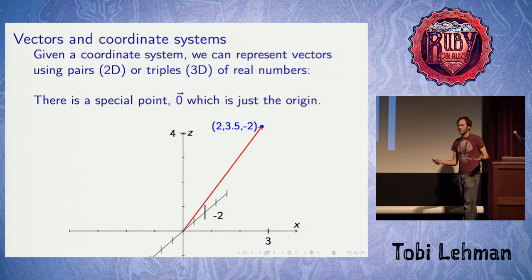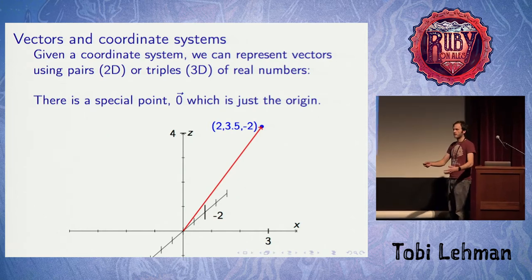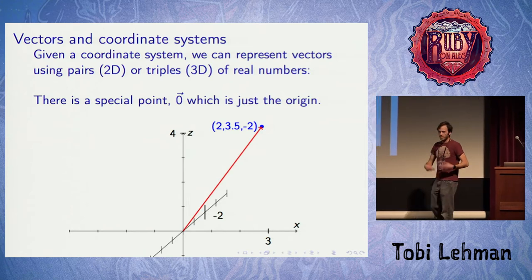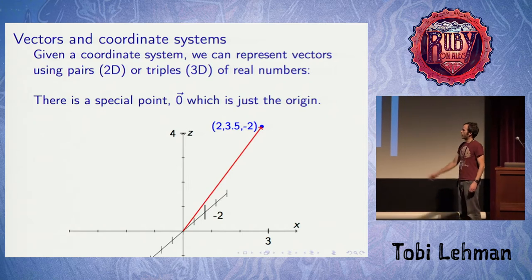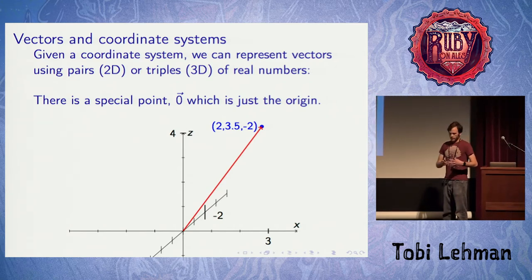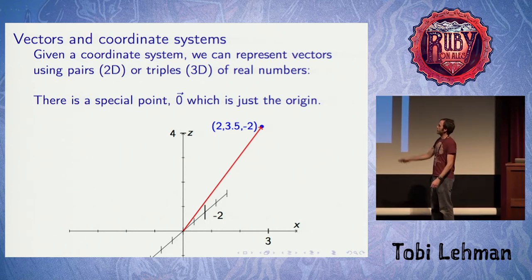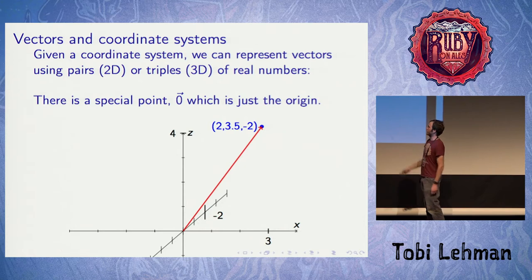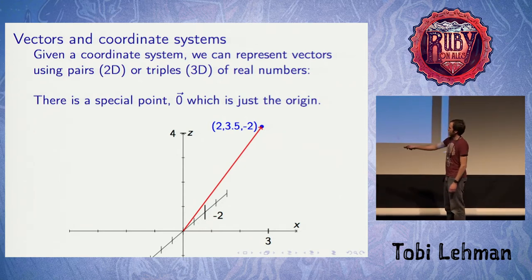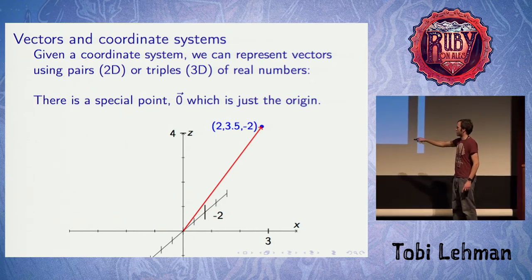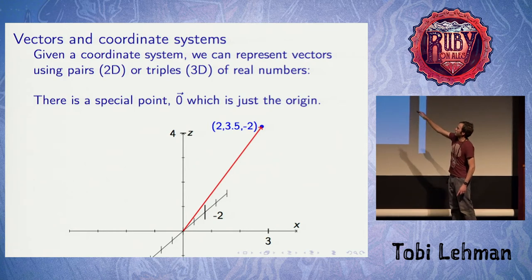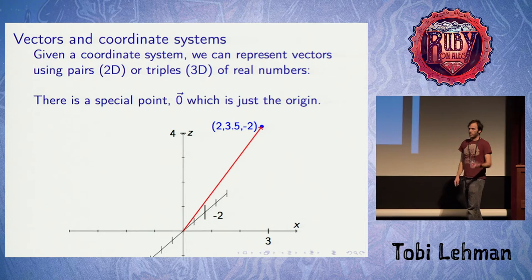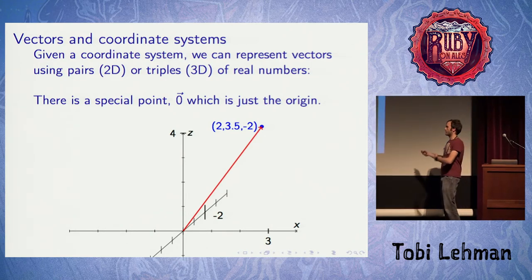Vectors aren't really useful when you just consider them geometrically. We want to actually do calculations and ultimately put it in a computer, which works in numbers and arrays. The way we go from a geometric arrow to something we can compute with is by choosing a coordinate system. We pick any three axes, requiring only that they are perpendicular — three mutually perpendicular lines. Once we choose that and a unit, we can count along each axis and write down a triple of numbers. In two-dimensional space we'd have a pair. That's the connection between this geometry and the code.